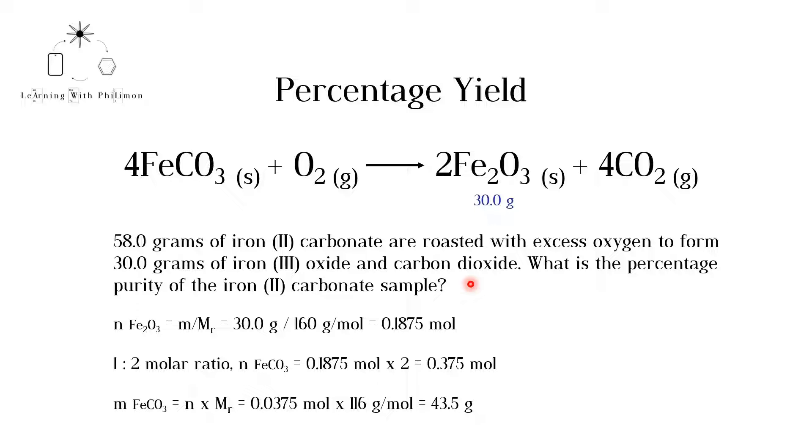We already know the total mass of the sample, but we need to calculate the mass of the pure substance. In these types of questions, we need to work backwards, from products to reactants. We know that 30.0 grams of Fe2O3 are formed, so we can determine how many grams of FeCO3 would be required to form this amount of product.